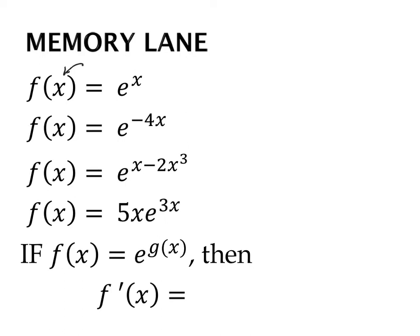Remember, this is what tells you the variable. The function name is f, and the variable we have is x. So when we take the derivative of e to the x, we get f prime of x, which is just e to the x.